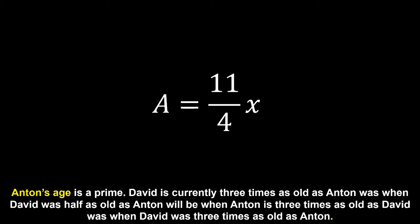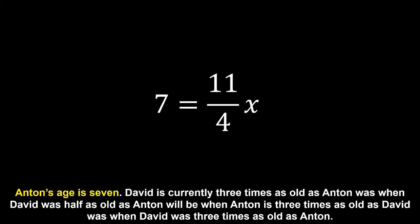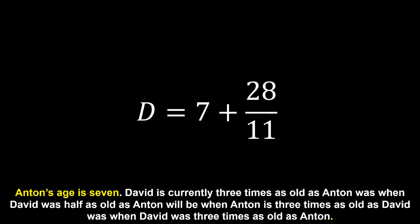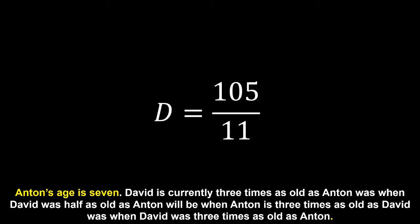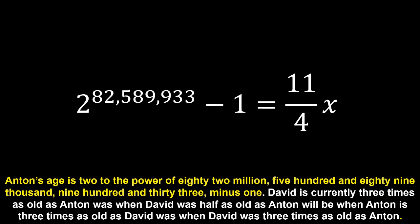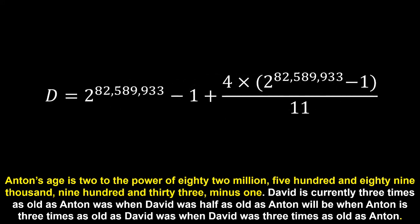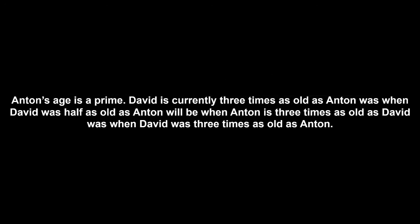For instance, we could just pick a random prime number of 7. We can restructure this formula to give us a rational value for the age difference, and add this age difference to Anton's age to get David's age, which can be represented as 105 on 11. However, we could also take a different prime number, such as 2 to the power of 82,589,933 minus 1. We can restructure this again to get the age difference and add it to Anton's age to get David's current age — which is a number at least. This goes to show that only giving us the information that Anton's age is a prime, and the complicated description for David's age, there is no single answer, and therefore this could not be considered a puzzle.